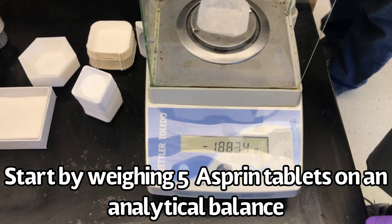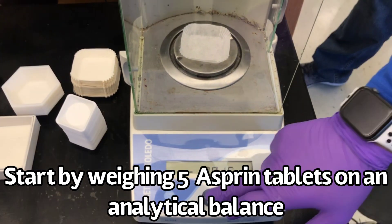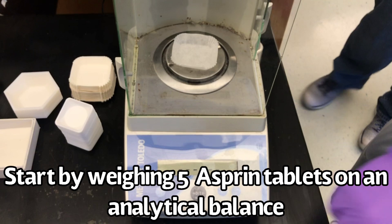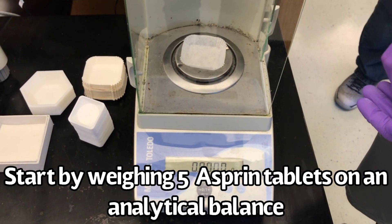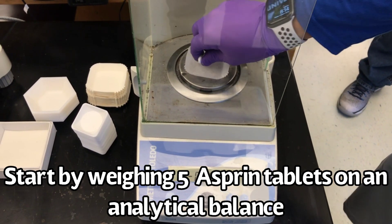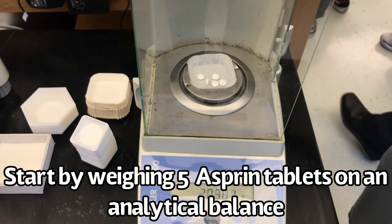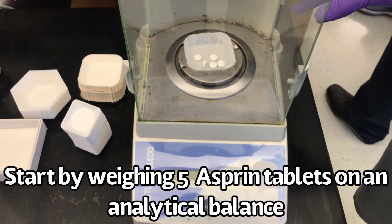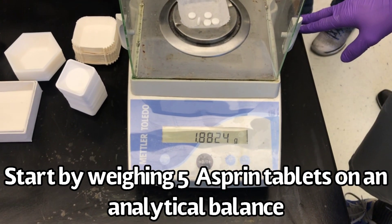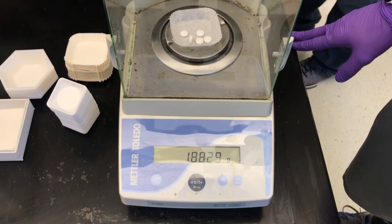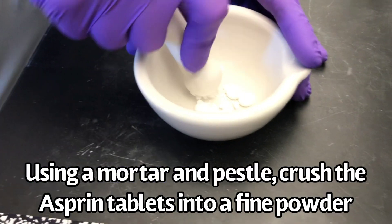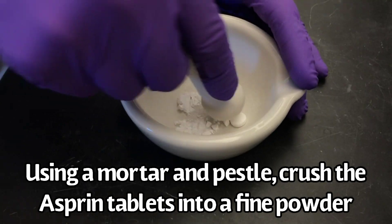Start by weighing 5 aspirin tablets on an analytical balance. Use a mortar and pestle to crush the aspirin tablets into a fine powder.